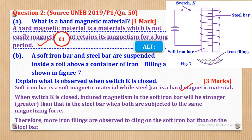The first mark is for knowing that steel bar is a hard magnetic material and soft iron is a soft magnetic material. The next paragraph earns another mark, and the last paragraph earns another mark — that's how the three marks could be got in this part.